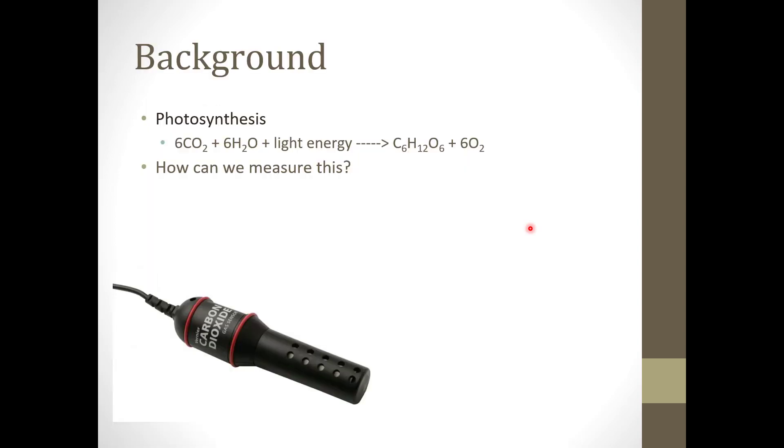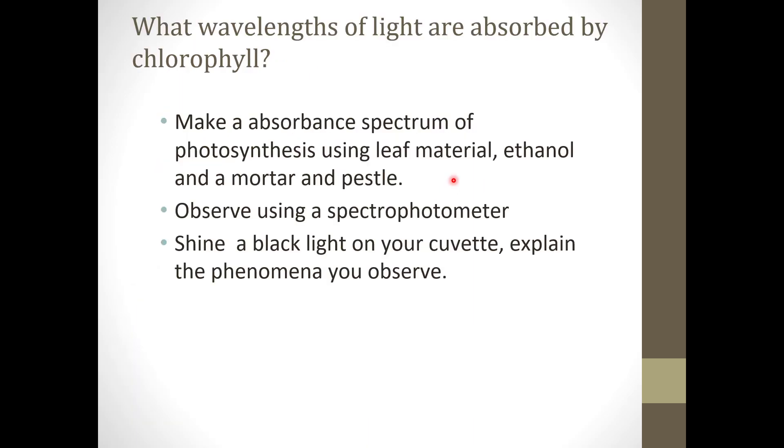The probes we're using today - we have two probes you can use. One is a carbon dioxide sensor. Here is the formula for photosynthesis: six carbon dioxide plus six water molecules yields glucose and oxygen gas, and of course light energy is involved. We're going to measure this using one of two probes, or perhaps both, a carbon dioxide sensor or an oxygen sensor. We can read how much carbon dioxide is coming into this reaction, or we can see how much oxygen gas is being released.